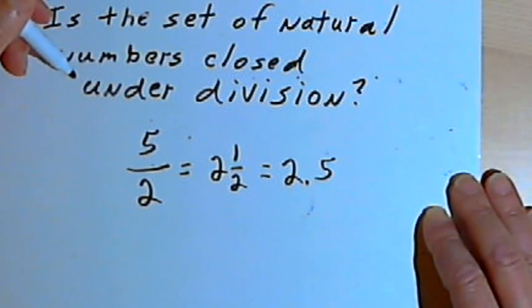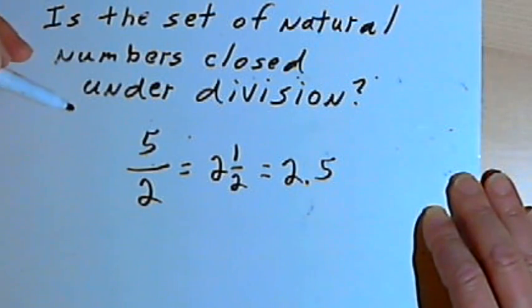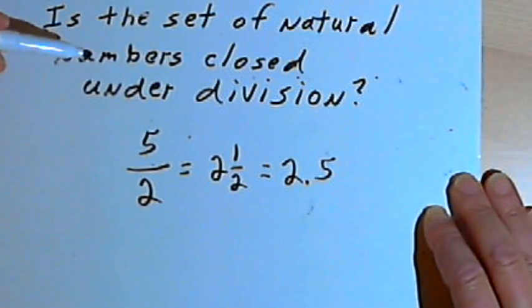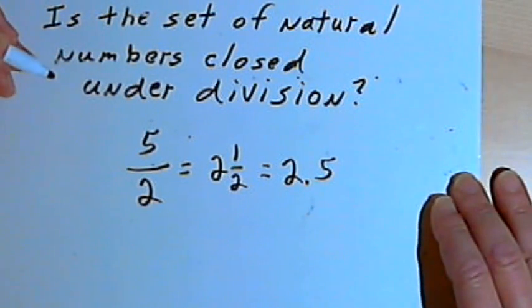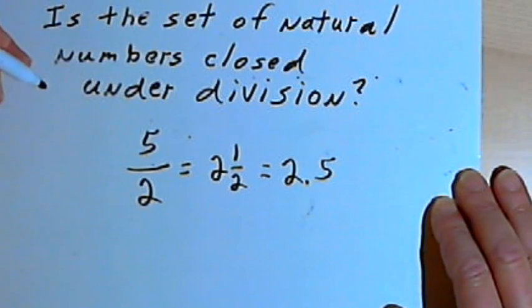So that's basically the concept. You may be asked more complicated questions like, is the set of all even natural numbers closed under addition? Or is the set of all perfect squares closed under multiplication?